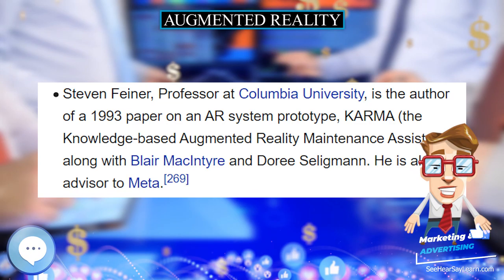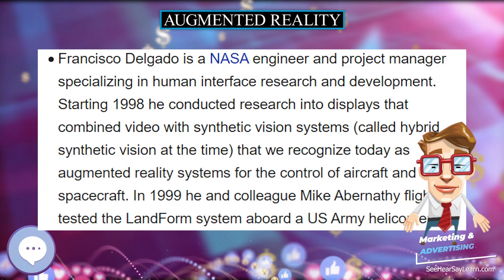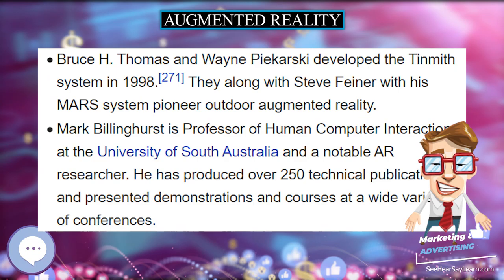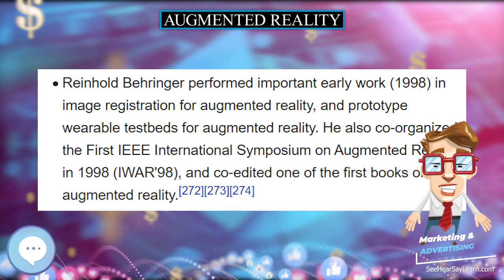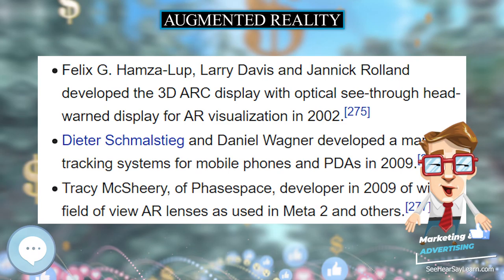Games such as Pokemon Go and Ingress utilize an image-linked map interface, where approved geotagged locations appear on a stylized map for the user to interact with. Spatial augmented reality (SAR) augments real-world objects and scenes without the use of special displays such as monitors, head-mounted displays, or handheld devices. SAR makes use of digital projectors to display graphical information onto physical objects.